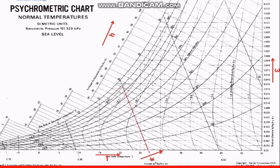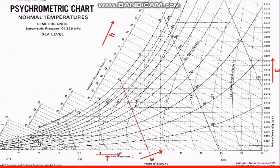Inside the graph we have the relative humidity curves: 10%, 20%, 70%, going all the way up to 100%. Using the formula — relative humidity equals vapor pressure over saturation pressure — when it reaches 100%, the vapor pressure equals the saturation pressure.